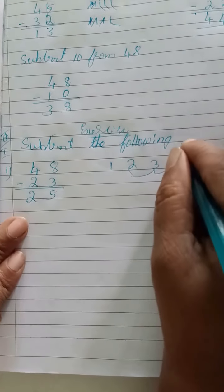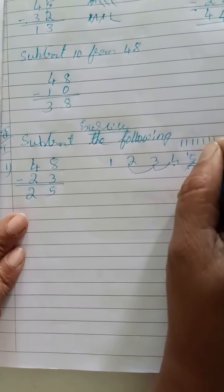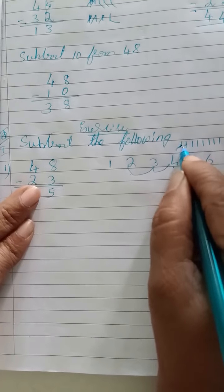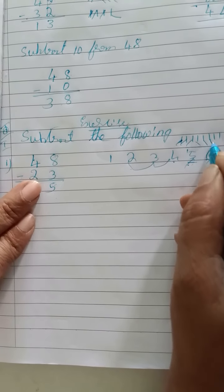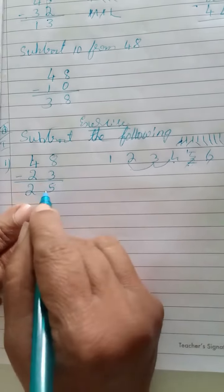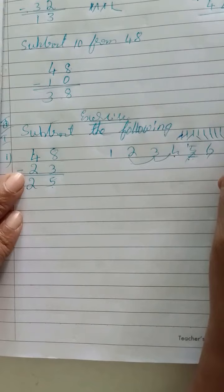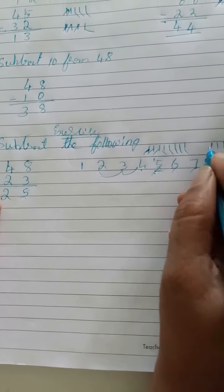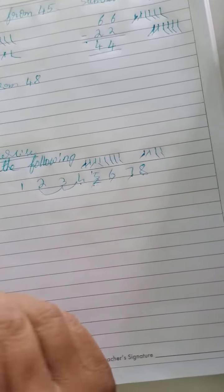Eight ones, scratch three: one, two, three - remaining one, two, three, four, five. Four tens, minus two: one, two - remaining one, two. Correct children? Next sum: thirty-seven minus sixteen. How much in ones place? Seven. I have to minus six.